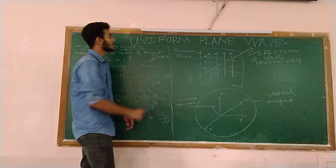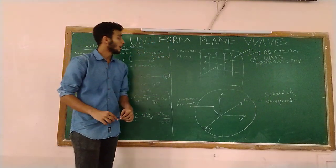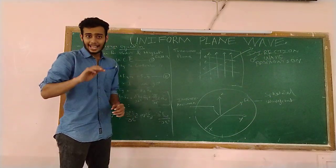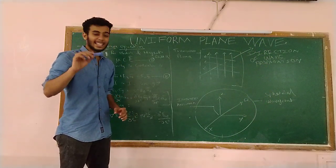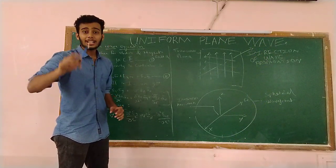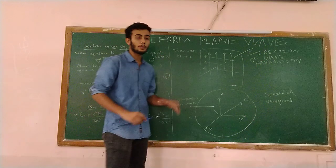Now let us come to the main question which is what is Uniform Plane Wave? So if the field has same magnitude and same direction at every point on any plane, in the direction perpendicular to travel, it is called a Uniform Plane Wave.